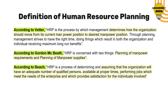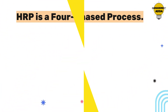Simply put, human resource planning can be understood as a process of forecasting an organization's future demands and supply for the right type of people in the right number. In other words, it is a process of determining manpower needs and formulating plans to meet those needs.